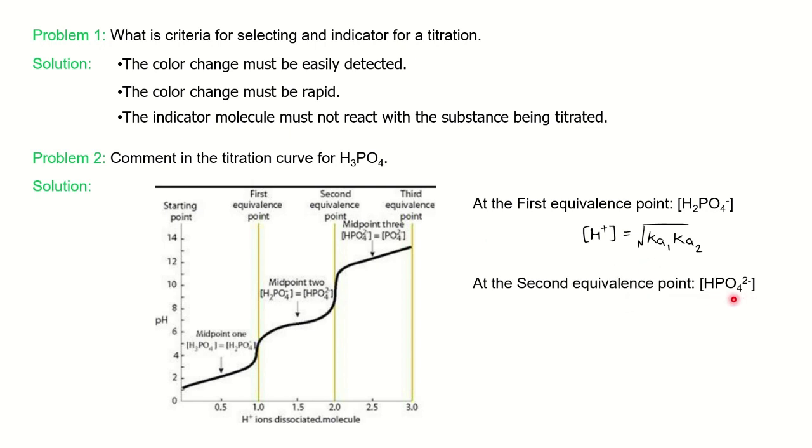Second equivalence point, you have only HPO₄²⁻ and you can calculate the concentration of H⁺ by using √(Ka2 × Ka3), where Ka1, Ka2, Ka3 are the dissociation constants. Third equivalence point, you have only PO₄³⁻ species left. And since the medium is alkaline, you can calculate the concentration of OH⁻ by using the formula √(Kw/Ka3 × [PO₄³⁻]). So with the help of these three formulas, you can find the concentration of H⁺ and so you can find pH value.